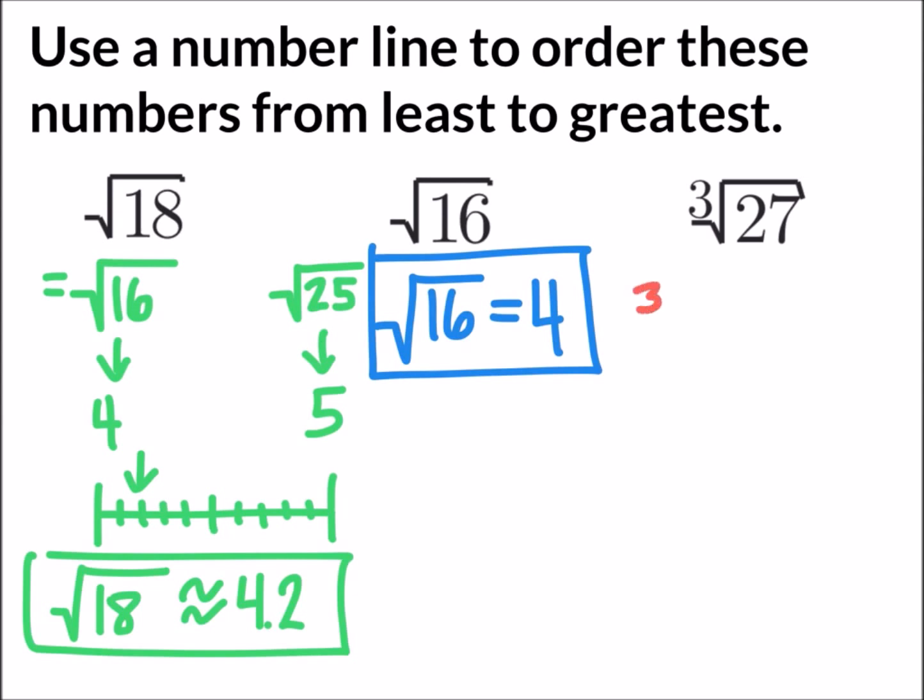And the cubed root of 27 we could rewrite as the cubed root of 3 times 3 times 3, which means the cubed root of 27 equals 3.